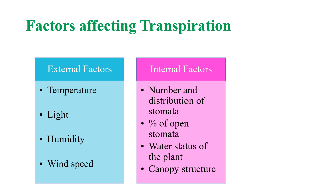There are external and internal factors affecting transpiration. External factors include an increase or decrease in temperature, fluctuation in light intensity, increase or decrease in humidity, and variable wind speed, which can affect transpiration in plants. Internal factors such as number and distribution of stomata, percentage of open stomata, water and temperature status of the plant, and canopy structure can also affect transpiration.